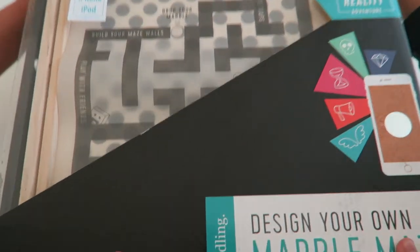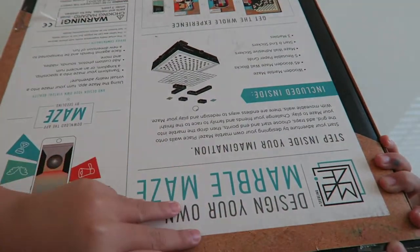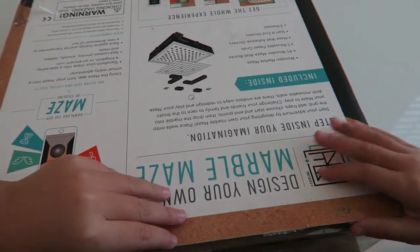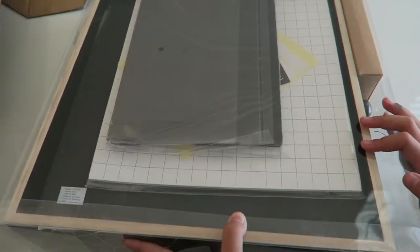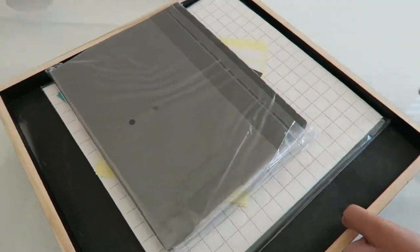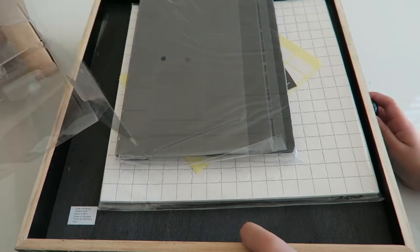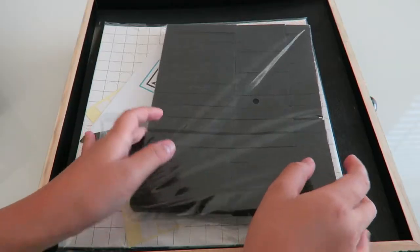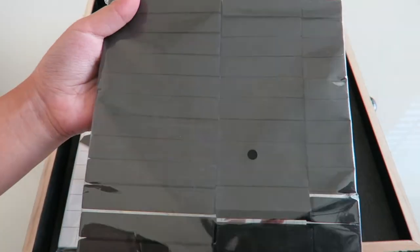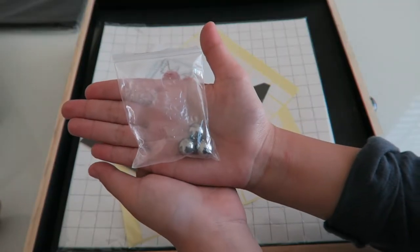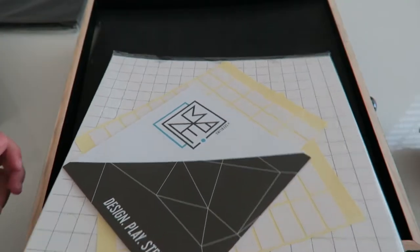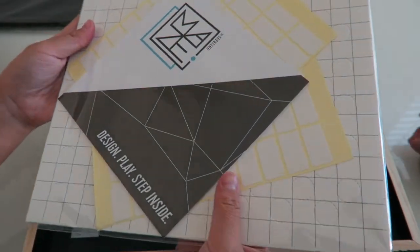Let's open it. So the first thing we have is the wooden maze wall blocks. The next one is three marbles. Then we have this. Let's open it.